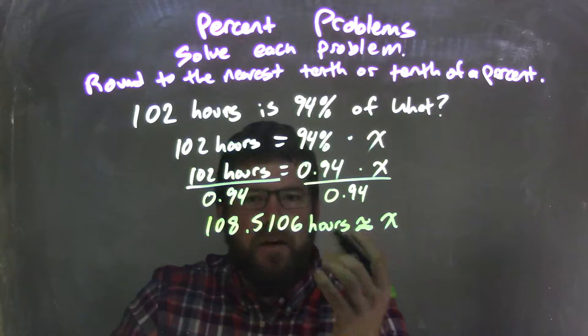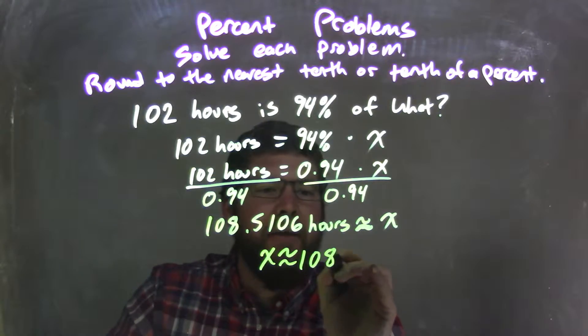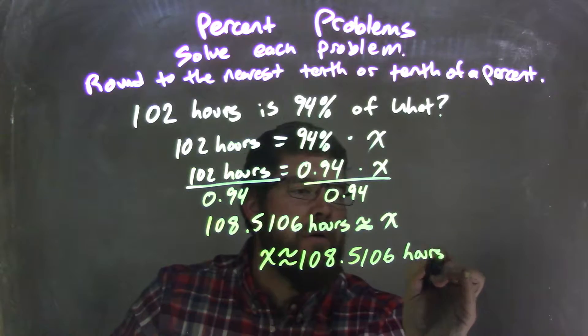Then from there, I'm going to write X first because it looks nice. X is approximately 108.5106 hours.